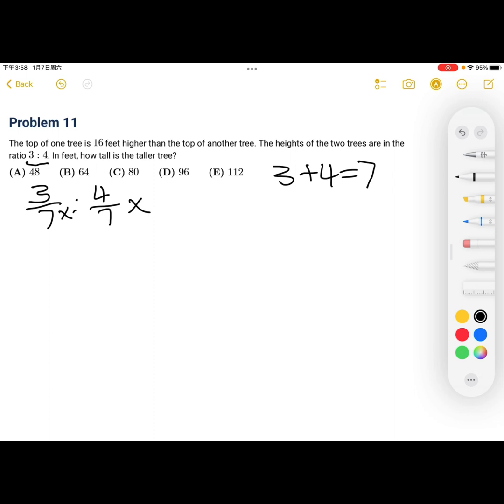And then we have that one of the trees is 16 feet higher. So we can rewrite this equation as 3 sevenths x compared to 3 sevenths x plus 16.